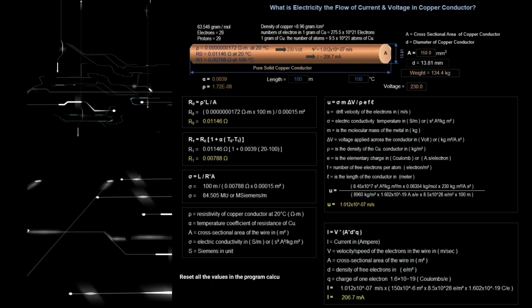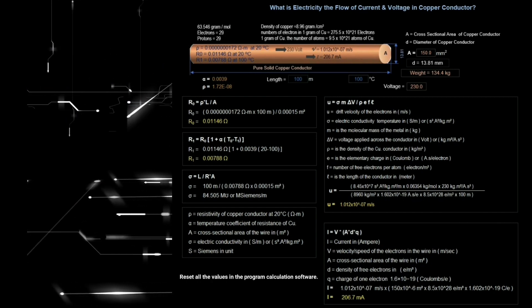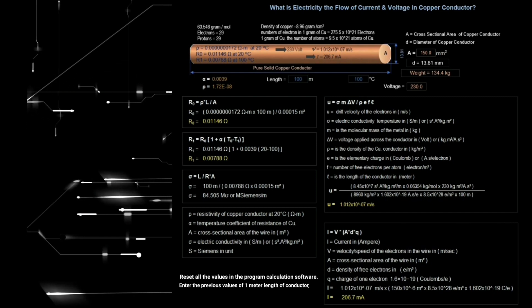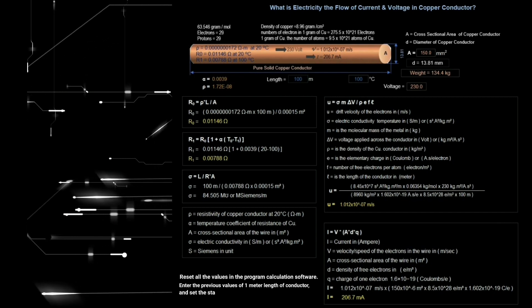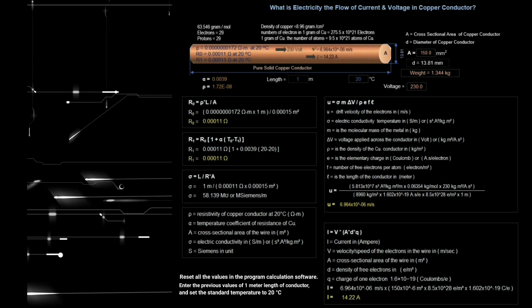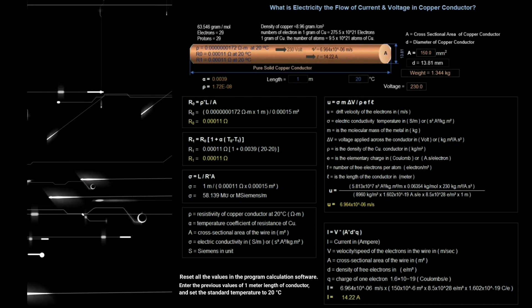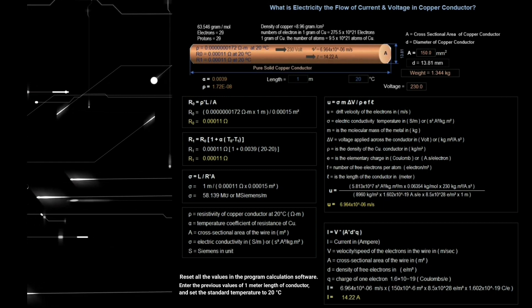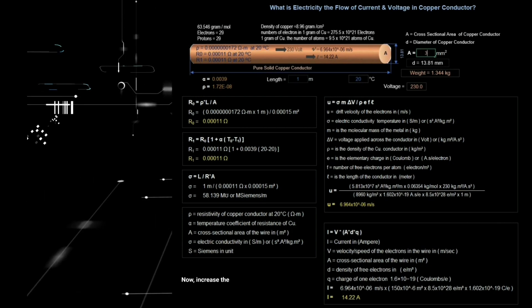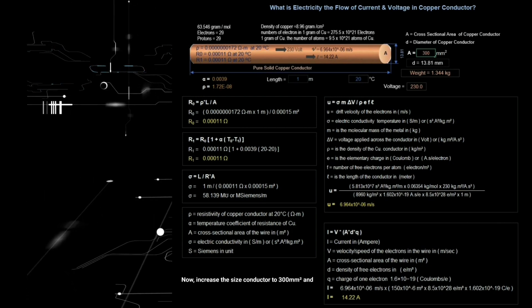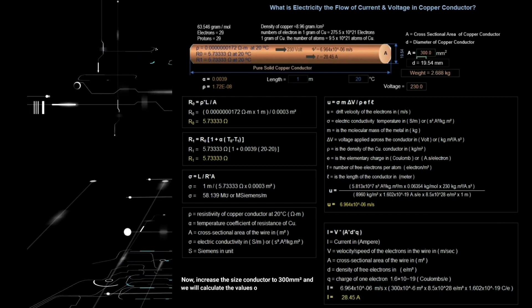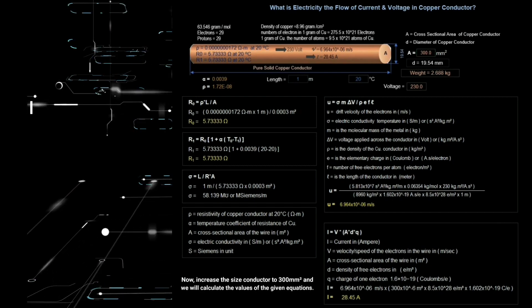Reset all the values in the program calculation. Enter the current values of one meter length of conductor and set the standard temperature to 20 degrees Celsius. Now increase the conductor size to 300 square millimeters and we will calculate the values of the given equations.